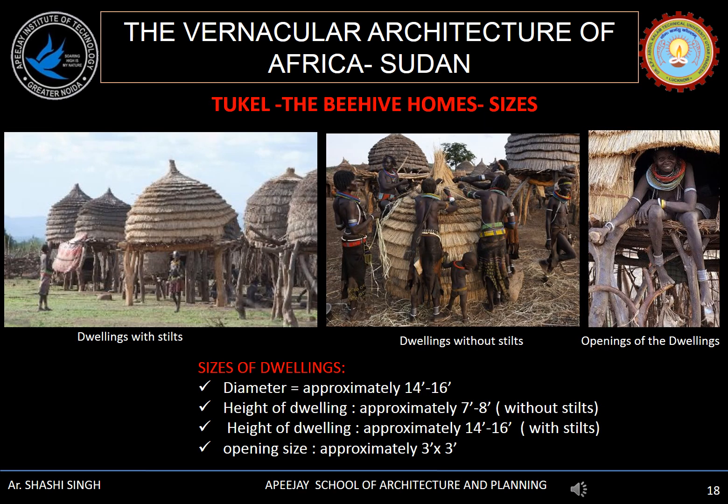Looking at the sizes and dimensions of these houses, the diameter is approximately 14 to 16 feet, the height of the house on ground is approximately 7 to 8 feet, and when raised above the stilts it is 14 to 16 feet. The openings are very small, approximately 3 feet by 3 feet.